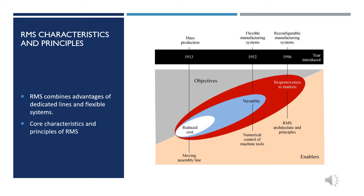By contrast to DML, where machines operate on many tools simultaneously, each CNC machine uses a single tool during its operation. The main advantage of RMS is that functionality and capacity can be changed rapidly and cost-effectively — a feature that neither DML nor FMS possesses. The throughput of RMS is higher than FMS output but lower than DML at a similar investment cost. RMS is designed around producing part families, so its flexibility is far higher than DML.